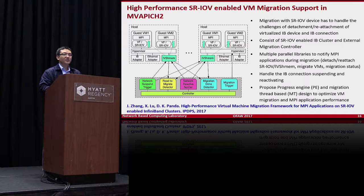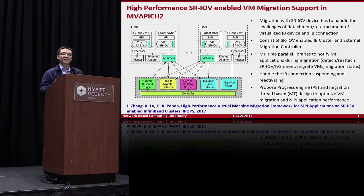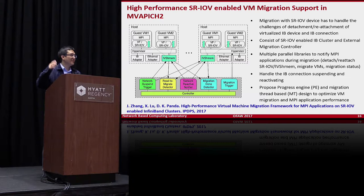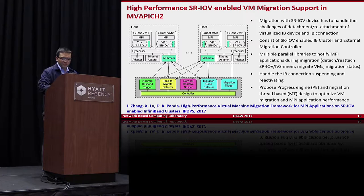Our solution combines changes in the MVAPICH2 library with an external VM migration controller. When migration is requested, the controller signals the VM, and internally the MPI library detects this, suspends the communication channel, and handles fault-tolerance-related state. It then signals the controller that migration can proceed. The controller performs the hot-unplug and completes the VM migration — all without modifying any hypervisor or driver. We have a paper this year with full details.